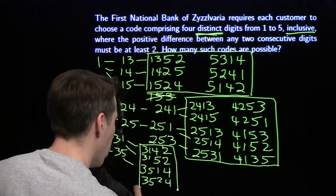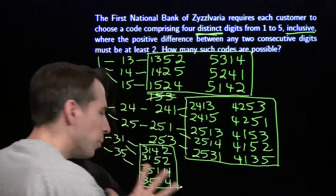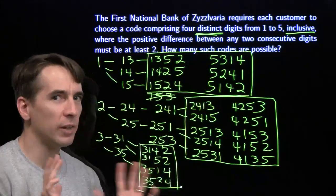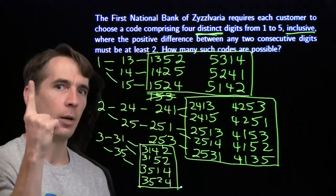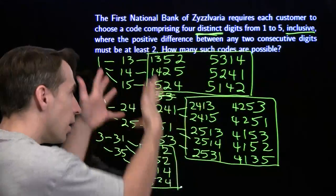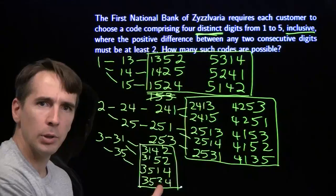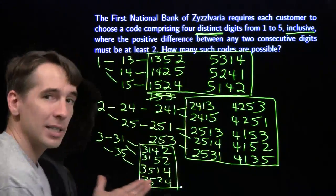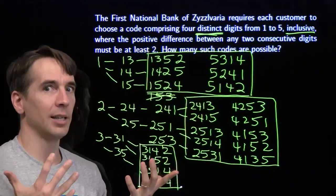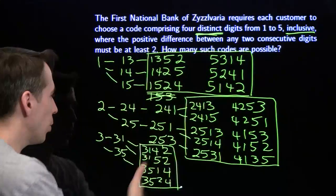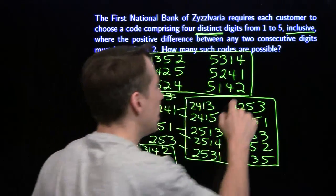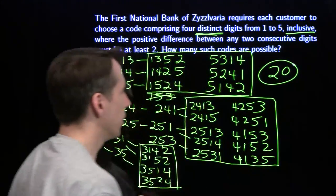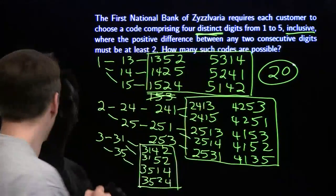We've got four more solutions starting with three. We've been nice and organized here, so we know we've hit everything once and haven't listed anything twice — that's the 'only once' part. We've got twenty codes on the board, and we're ready for the next problem.